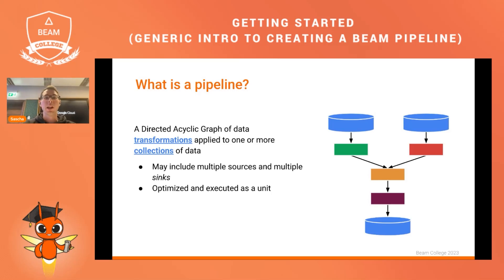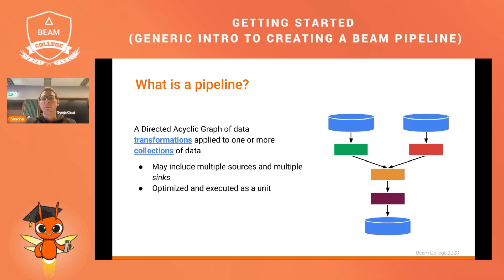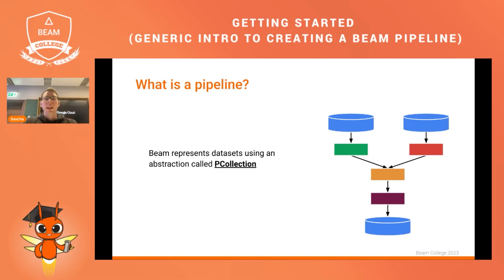When we talk about Apache Beam, we often talk about data pipelines. A data pipeline is represented as a graph of steps that are connected to each other. The data flows through the pipeline from one step to the next, being transformed along the way. Each step is a self-contained unit of work that takes one or multiple inputs and produces one or multiple outputs. Transformations can use built-in options for filtering, mapping, or grouping data, or you can define your own to meet specific business requirements.